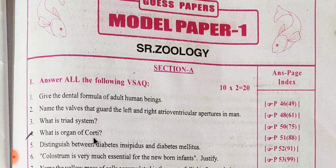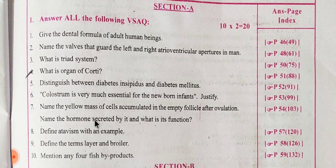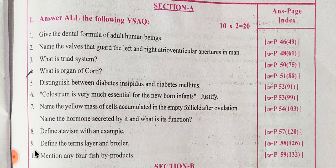In section A, you have 10 questions of 2 marks each. You will have 10 questions of 2 marks. In biology, you have a set of questions covering the core topics.